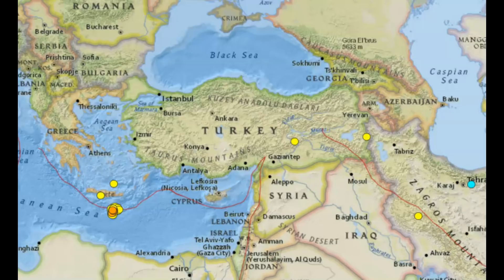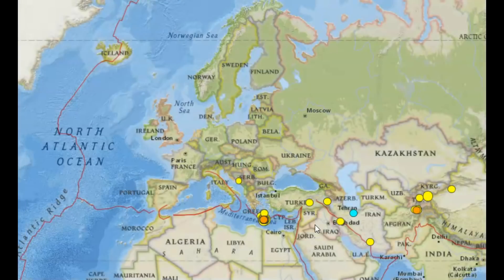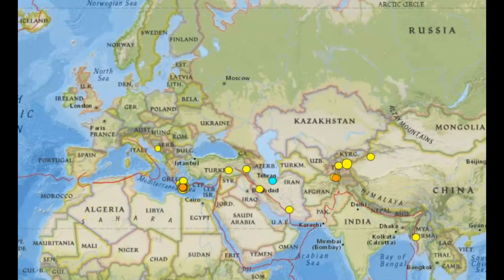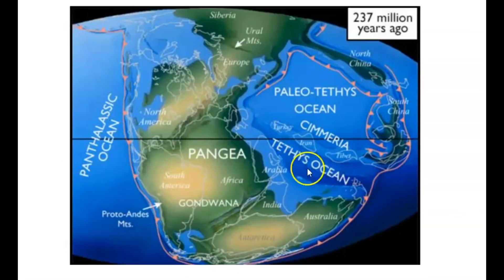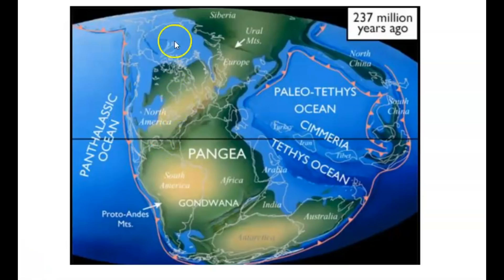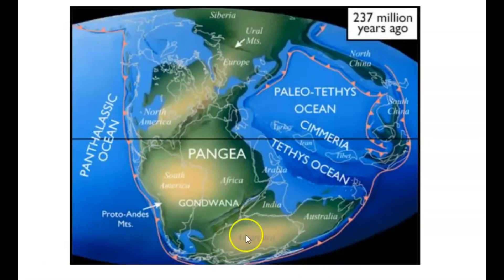Millions of years ago, when we had the supercontinent Pangea, it started to break up into four different sections and the continents started moving around the planet. This whole area was open at that time — what was called the Tethys Sea. Originally it was called the Tethys Ocean, and as the continents moved around it became a narrow strip. You can see here we got Siberia, South China, Pangea, Australia, India, Antarctica.